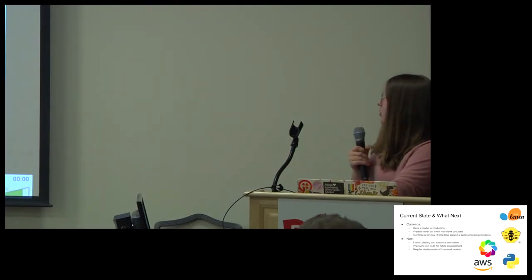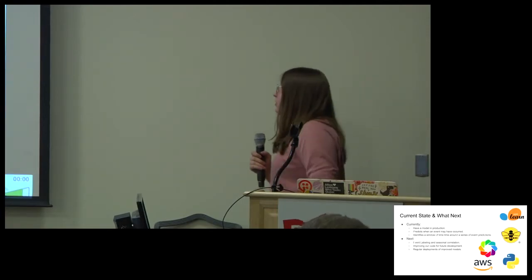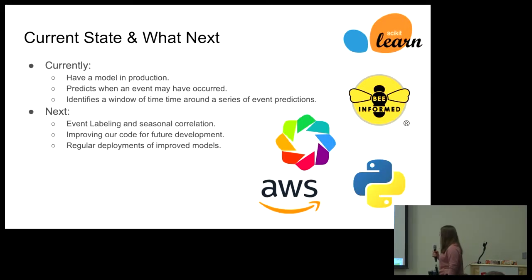So our current state, we currently have a model out in production with BeInformed. As far as I know, it's doing well. I haven't gotten any email updates recently, so it's not doing bad. It predicts when an event may have occurred. And it identifies a window of time in which a series of events may have occurred. So maybe you did some harvesting and you also added a super. We want to be able to see it in the hive.